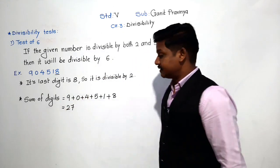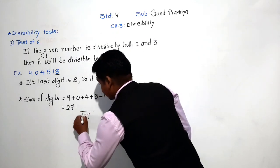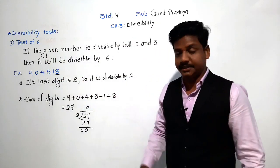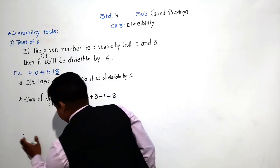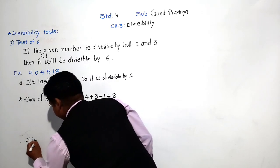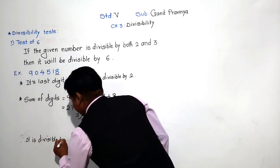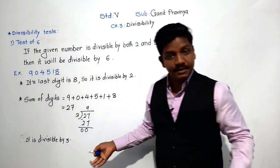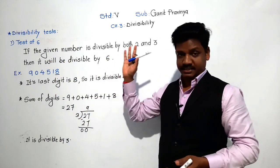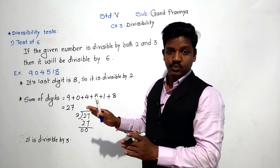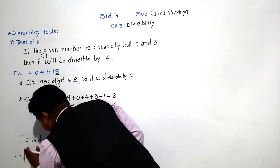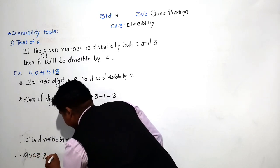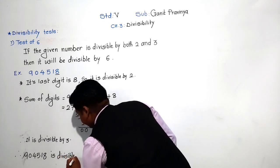Let us divide the sum by 3: 27 ÷ 3 = 9. Yes, 27 is divisible by 3. That means the sum is divisible by 3, and therefore this number is also divisible by 3. So the number 9,4518 is divisible by both 2 and 3, which means it is divisible by 6.